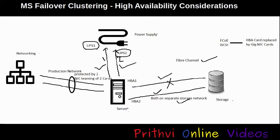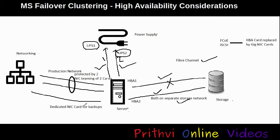After this, it is always recommended to have a third NIC card dedicated to server backups, because backups always consume very high IOPS and can throttle down the production network. Having a dedicated backup network card gives us the flexibility to run backups at any time and for any duration.